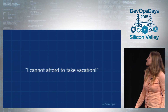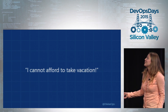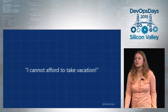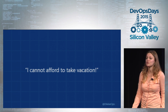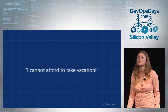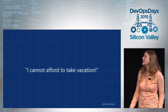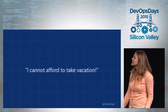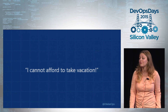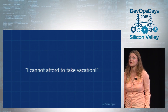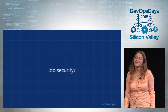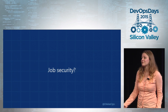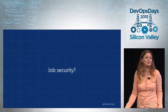Problem number three: 'I can't afford to take vacation.' People volunteer themselves to try to achieve the impossible — they try to be the person who can always be there. They work super long weeks, never take vacation, and if they're out of office even one day, problems start happening. Maybe they think it gives them job security — but first of all, it's really terrible job security, and second of all, you will never get promoted because no one can deal without you.